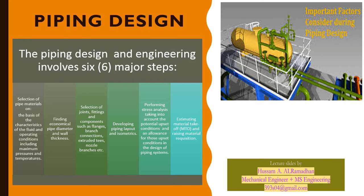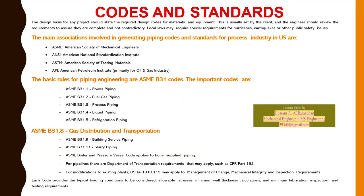Piping design and engineering involves six major steps: selection of pipe material; finding economical pipe diameter and wall thickness; selection of joints, welding, flanges, and nozzles; developing piping layout and isometrics; performing stress analysis taking into account potential upset conditions; and estimating material take-off (MTO) and raising material requisitions.